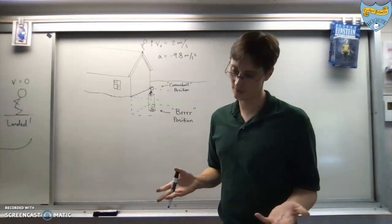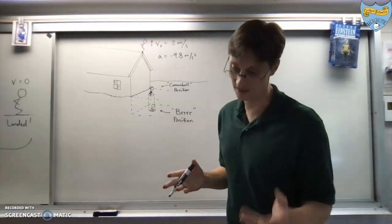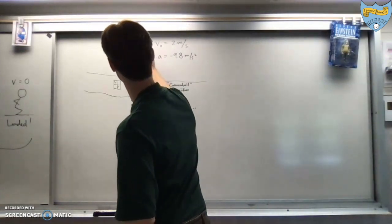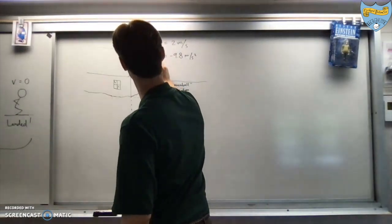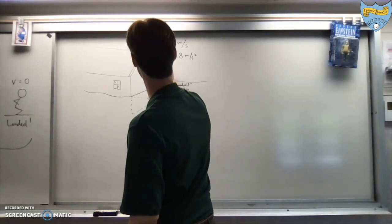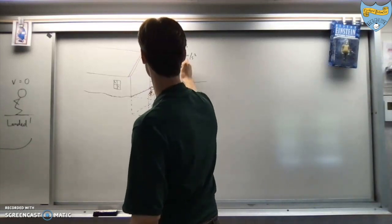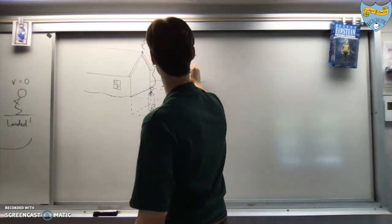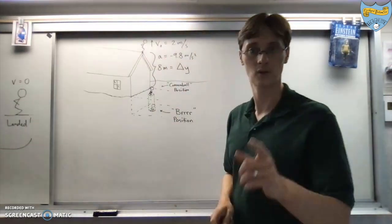During this whole part of the question, his acceleration will, of course, be negative 9.8 meters per second squared. The first part of this question tells you that it's 8 meters from the top of his roof to the beginning of snow. So this right here is 8 meters. That would be the displacement.